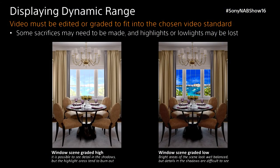Once you have that signal, you go into a production or post-production environment where the color grading process decides: I want to exploit the details in the shadows, so I'm going to grade that signal high — but by doing that, you may clip details in the highlights. Or, I want to expose details in the highlights, so I'll compress or crush the details in the shadows. This is the process of coloring or grading the signal in production or post-production.